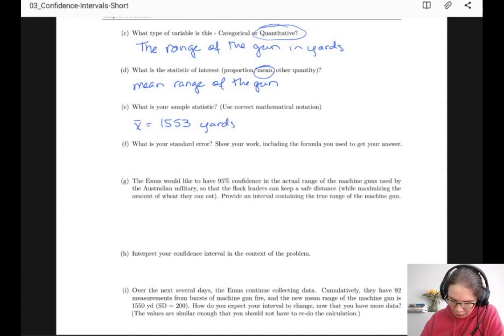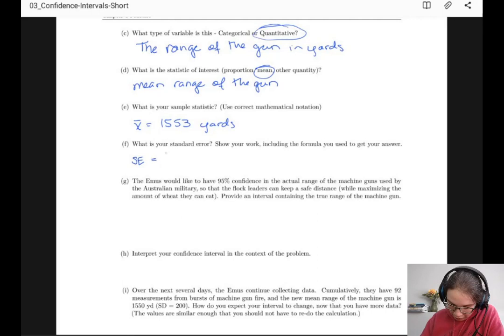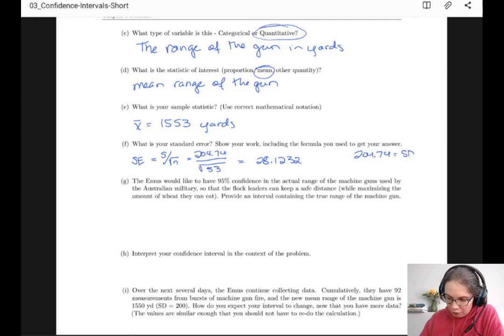Our standard error - this is where I flip over here and we look at the summary. The standard deviation of a sample mean is s over square root of n. So standard error is s over square root of n equals 204.74 over square root of 53, which is 28.1232.